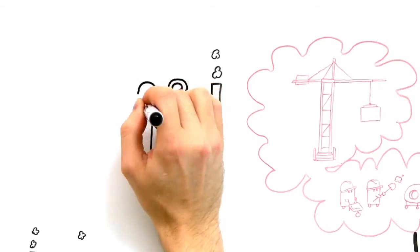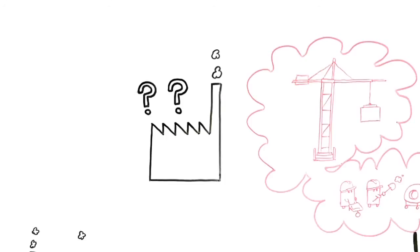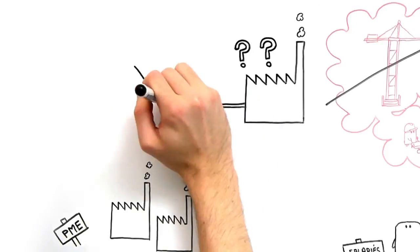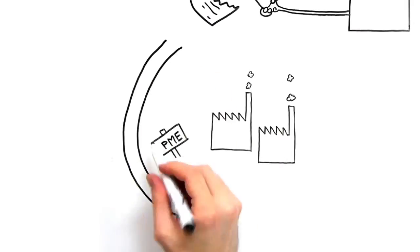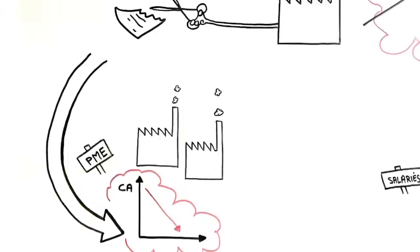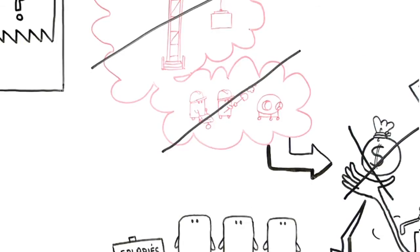Companies that cannot obtain financing must abandon their business development plans, which means cancelling any outgoing orders with suppliers and subcontractors whose revenue could drop significantly, and hiring fewer people than initially planned.